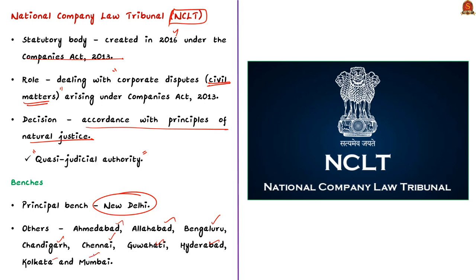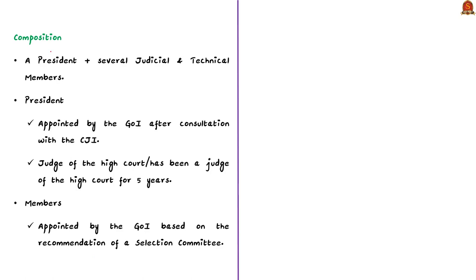With these basics, now let us see the composition of the body. It consists of a president and some other judicial and technical members. The president of the tribunal will be appointed by the central government after consultation with the Chief Justice of India. Note that the president of the NCLT must be a judge of a high court or must have been a judge of a high court for five years.